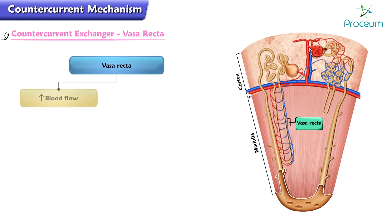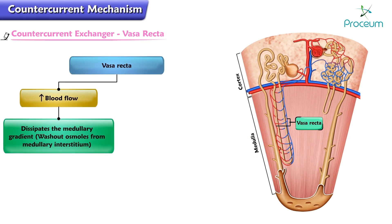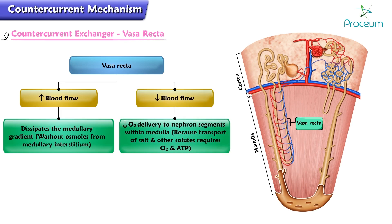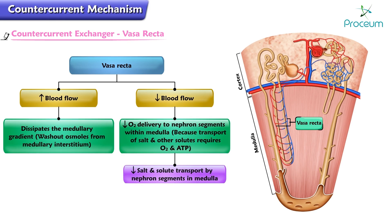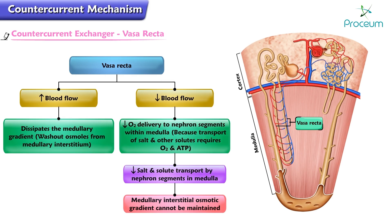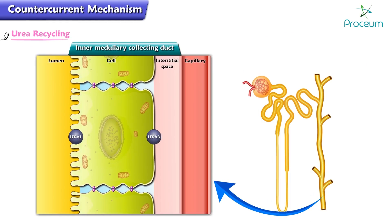The ability of the vasa recta to maintain the medullary interstitial gradient is flow-dependent. A substantial increase in vasa recta blood flow dissipates the medullary gradient by washing out osmoles from the medullary interstitium. Alternatively, reduced blood flow reduces oxygen delivery to the nephron segments within the medulla. Because transport of salt and other solutes requires oxygen and ATP, reduced medullary blood flow decreases salt and solute transport by the nephron segments in the medulla, and as a result the medullary interstitial osmotic gradient cannot be maintained.